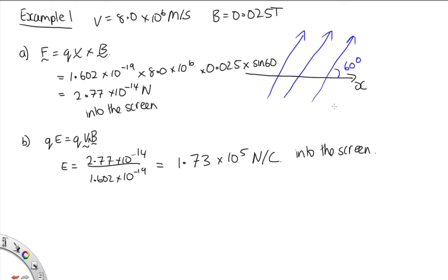Part C: what would happen to an electron with a different velocity placed in the fields from Part B? If we placed an electron with a smaller velocity, the magnetic force would be less but the electric force would remain the same. So it would move out of the screen slightly, as the electric force is stronger. An application for this is a velocity selector: if you balance your magnetic and electric fields for a specific velocity, only particles with that velocity will travel in a straight line.